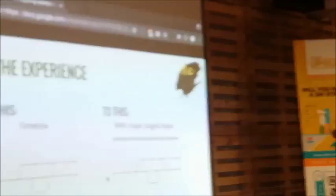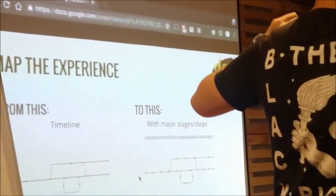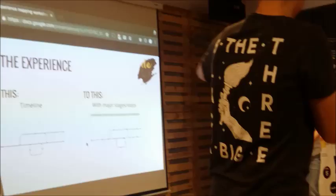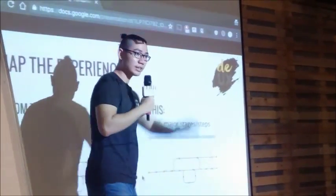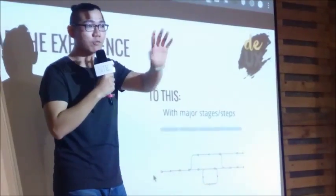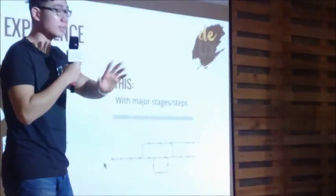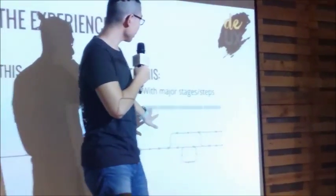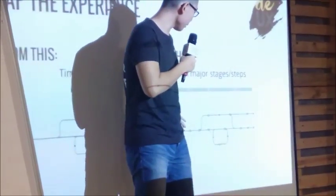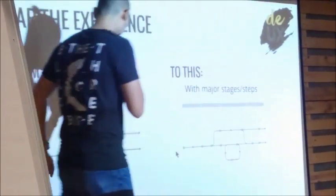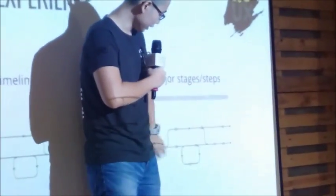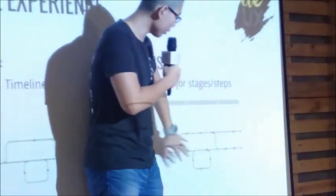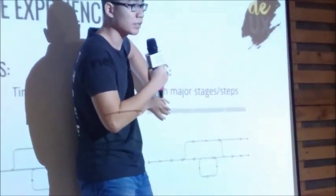Starting from A and ending up at C — you can see that there are not just a timeline, but major steps and phases. What you just listed down, whether it's four, five, or six stages, these are the top-level phases. There are many, many things that they do inside each one. The timeline goes from A to Z, but from A to Z they're doing many different things — all of these are encompassed under a stage.